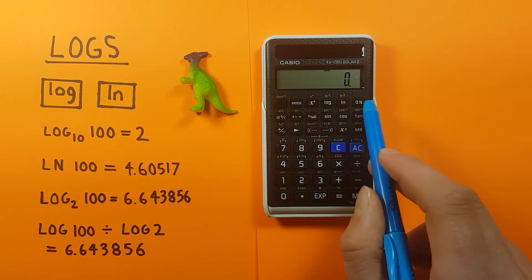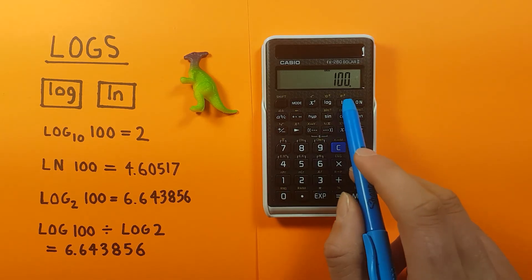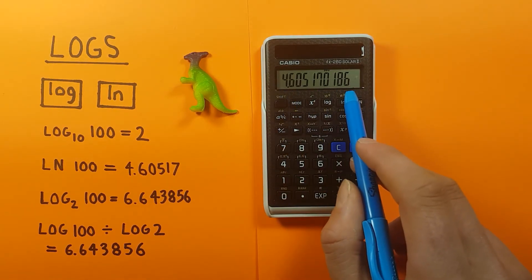Easy enough, and then we can find the natural log of a number as well by simply pressing the ln key which gives us that result.